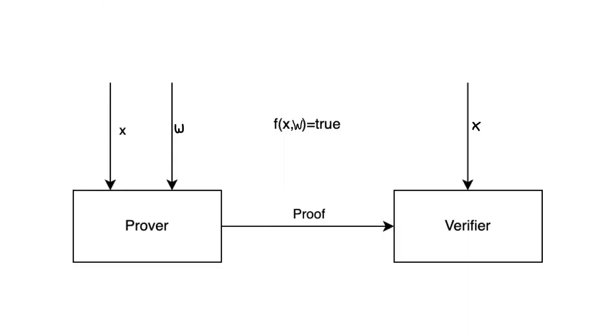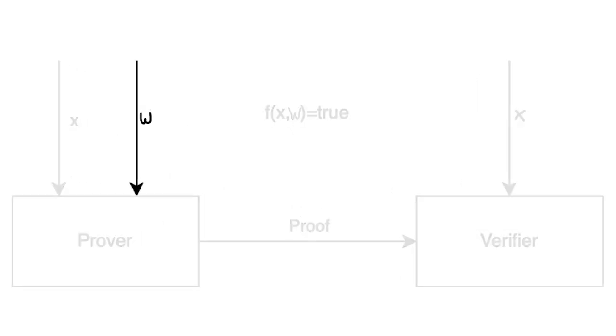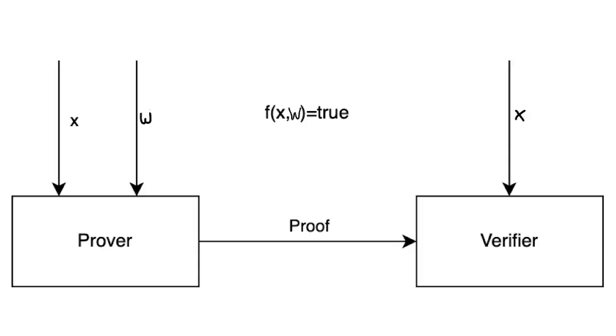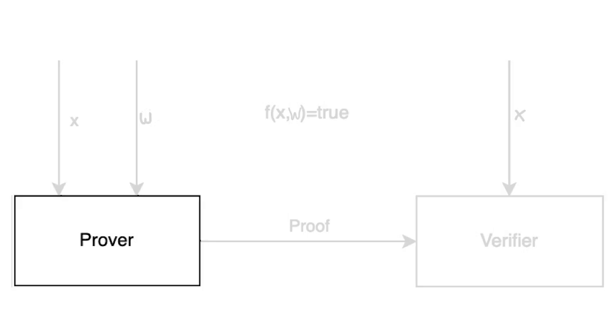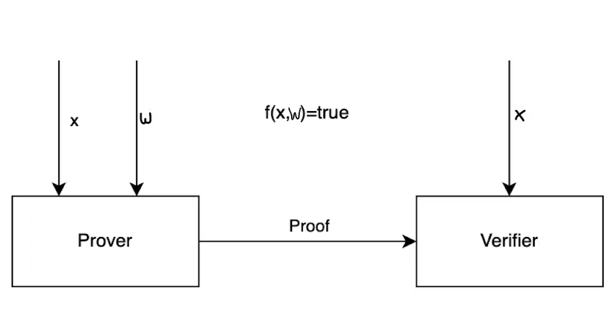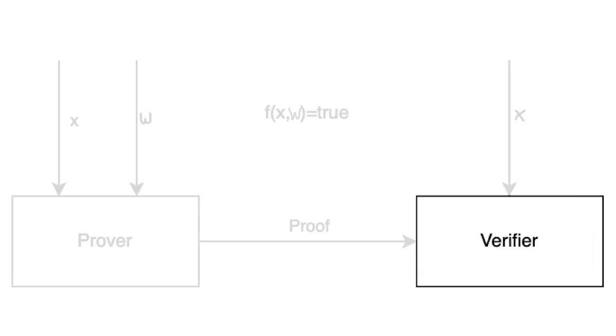Now let's call the secret information the witness, and let's call the party that has the witness and who wants to prove its legitimacy the prover. And let's call the other party that doesn't have the witness but who will verify its legitimacy the verifier.